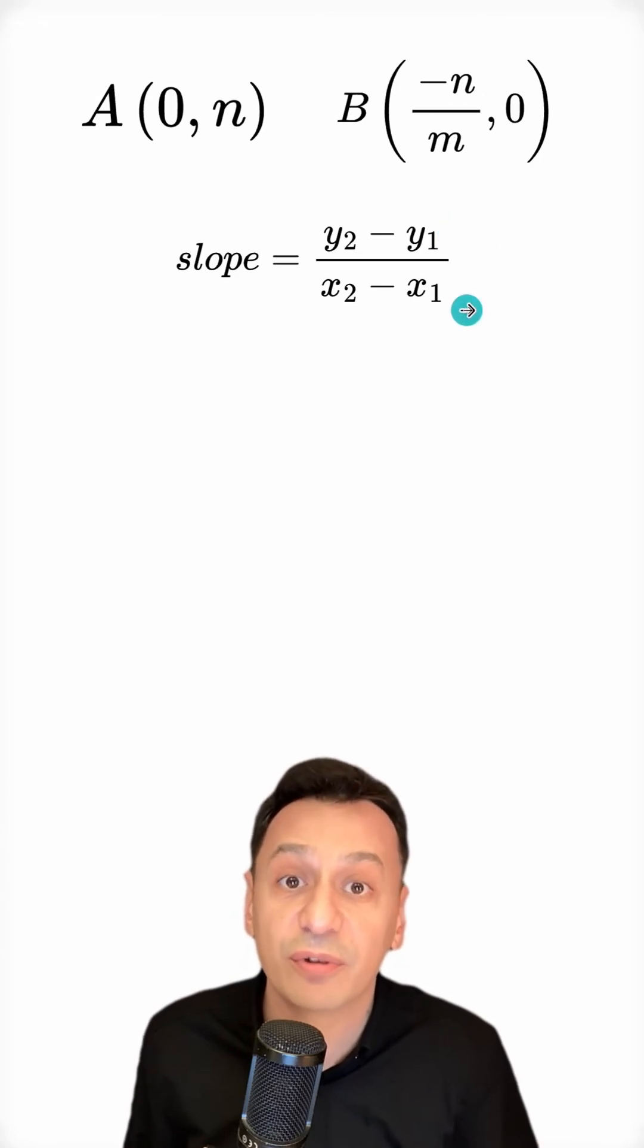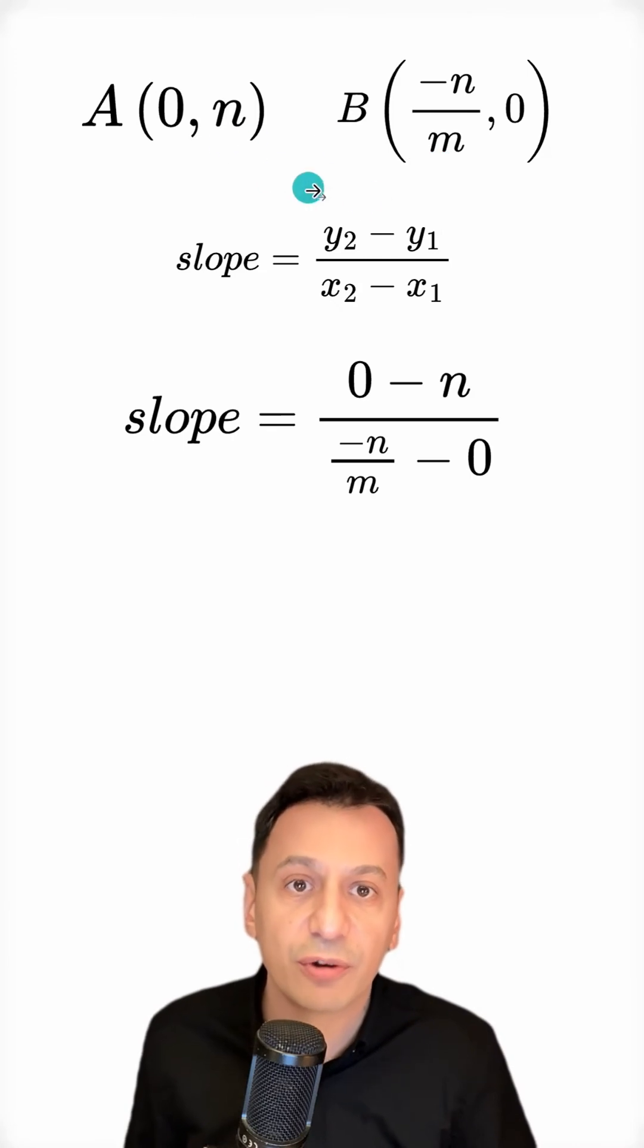Now that I have two points, I can calculate the slope by dividing the difference of their verticals by the difference of their horizontals. I subtract n from 0. And from minus n over m, I subtract 0.